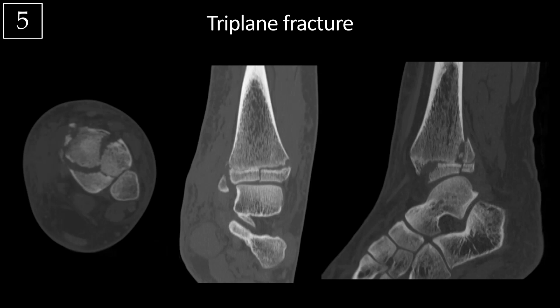Because of those three components, it's known as a triplane fracture. These often require open reduction and internal fixation and can be complicated by growth plate arrest. This is different from the Tillaux fracture, which is only a Salter-Harris 3 fracture — involving the epiphysis and the growth plate but not the metaphysis — so you need multiple views to accurately make this diagnosis.